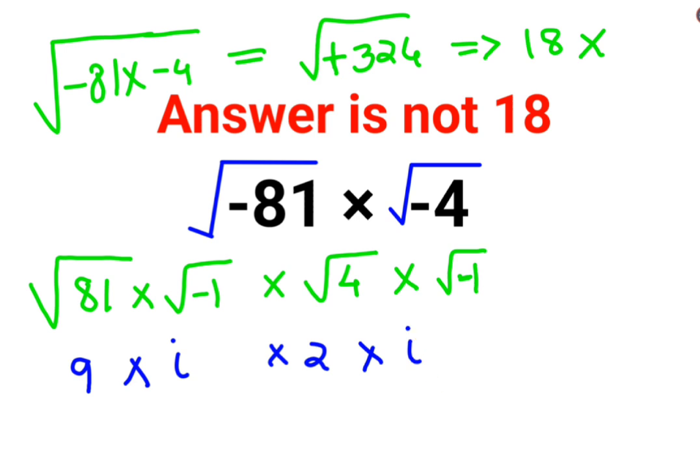So now what you get is 9 into 2 gets you 18, and then i into i gets you i square.